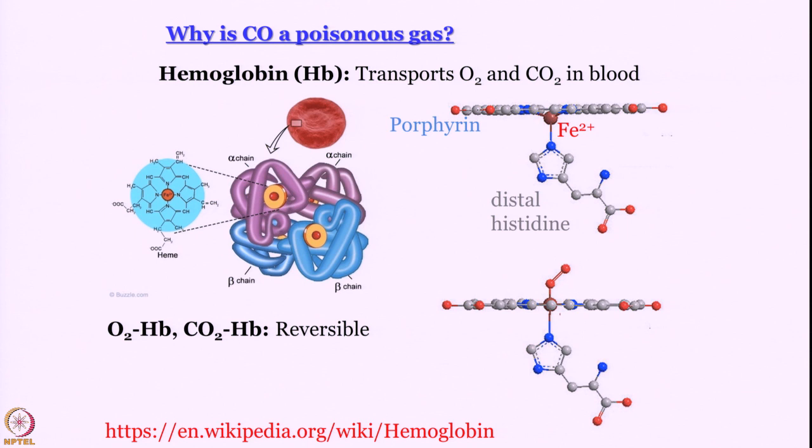It forms a very strong complex carbonyl hemoglobin and that is why hemoglobin is blocked, it cannot participate in oxygen transport and the organism dies of lack of oxygen, asphyxia. So, CO2 and O2 form reversible complexes with hemoglobin whereas carbon monoxide forms an almost irreversible complex with half life of several hours and by that time the damage is done. That is why it is a poison.